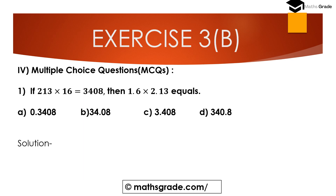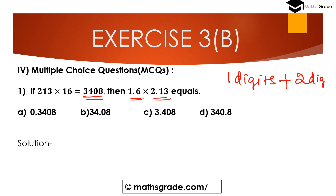Question number 4, multiple choice questions (MCQs). First question: if 213 multiplied with 16 is 3408, then 1.6 multiplied with 2.13 equals? In 1.6, after the decimal point there is only 1 digit — that is 6. And in 2.13, after the decimal point there are 2 digits — that is 1 and 3. So 1 digit plus 2 digits is 3 digits total after the decimal point.